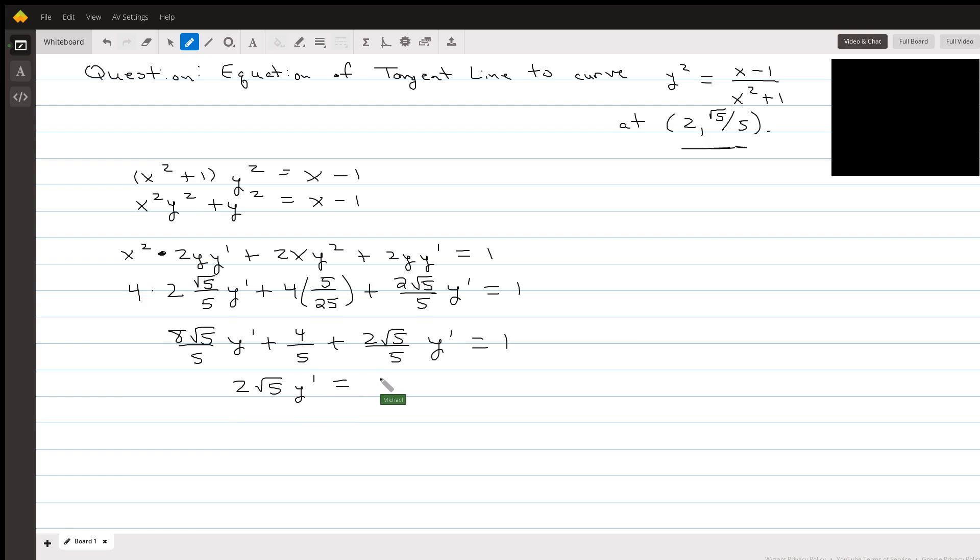Move the 4 fifths over as a negative, so 1 fifth. And so y prime will be 1 fifth times 1 over 2 root 5, giving us 1 over 10 root 5.